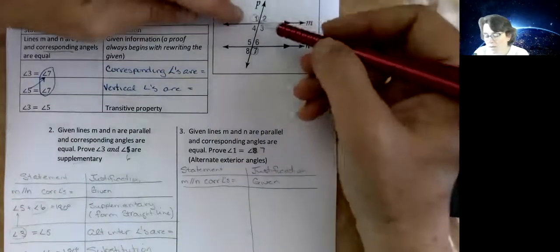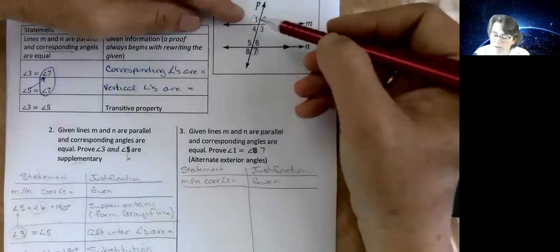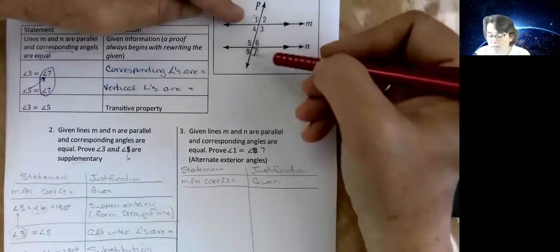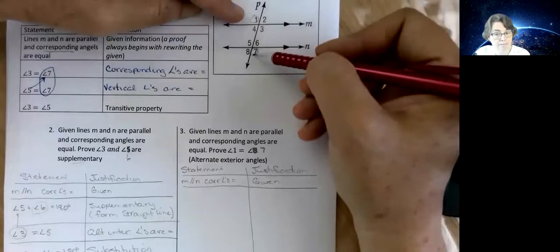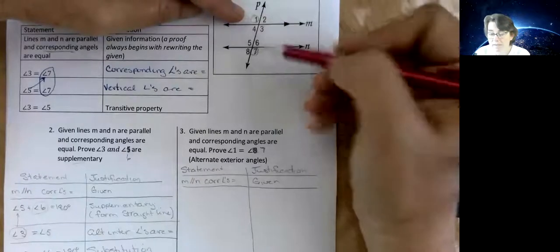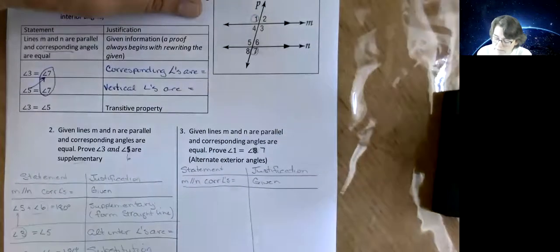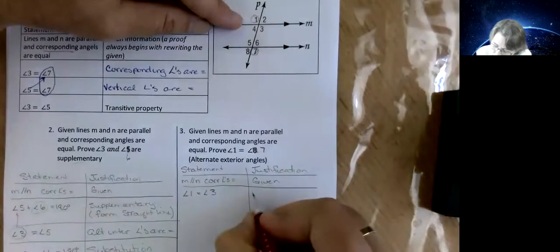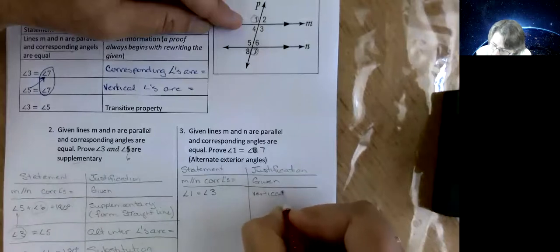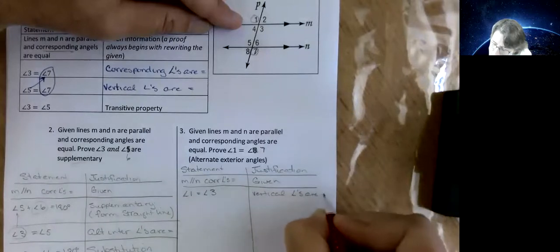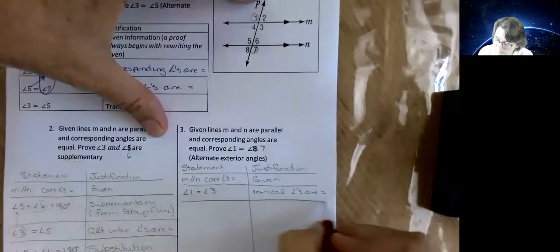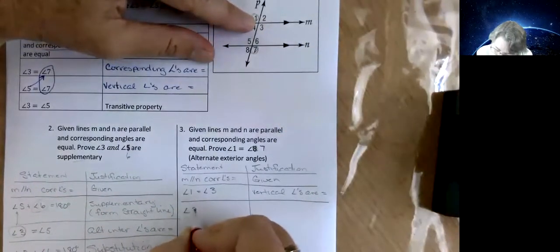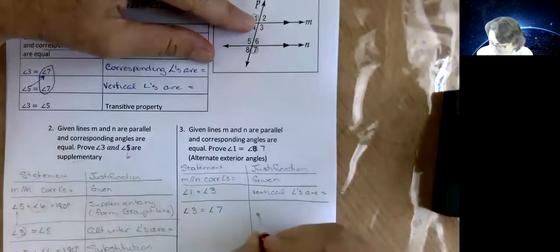1 I can relate to 3. Well, that would work. So 1 is equal to 3 because those are, I hope you said vertical angles. And then 3 is equal to 7 because, of course, corresponding angles. And then we could just use that transitive property. And then they're equal to each other. So vertical angles are equal. We said 1 is equal to 3. And then we said 3 is equal to 7. Corresponding angles.